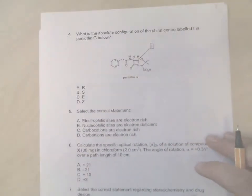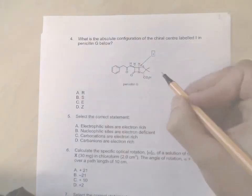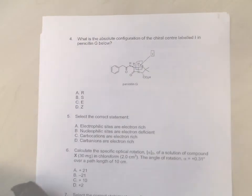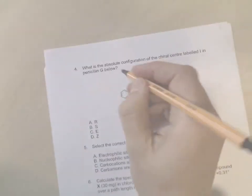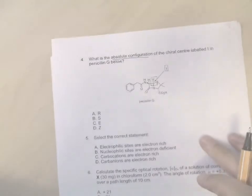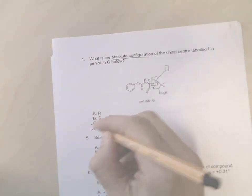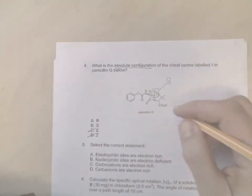Okay, using the same priority rules then, now we're going to apply the absolute configuration to this chiral center labeled I, so we're looking at this one in particular in penicillin G. So if we're talking about absolute configuration, we're not talking about double bonds E and Z, so straight away you can get rid of E and Z answers, C and D.